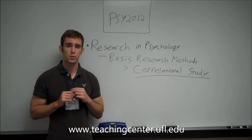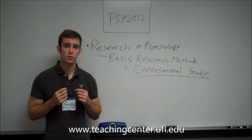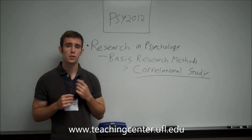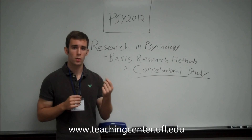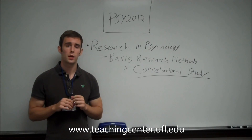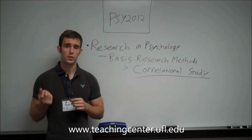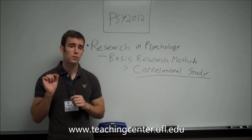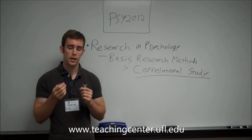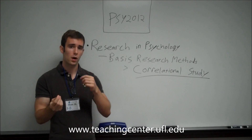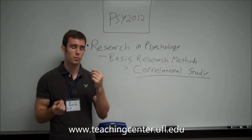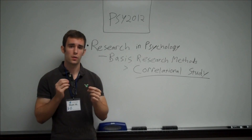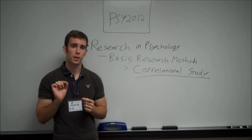A correlational study is a way to measure relationships between two different variables. Basically we're asking, is there a relationship between one thing and the other? For example, alcohol use and depression — are the two connected in some way? However, we can't say that alcohol is causing depression or depression is causing people to drink more. We just know that they're connected. It doesn't tell us about cause and effect.